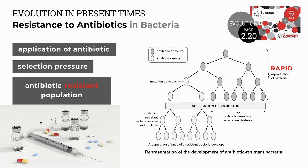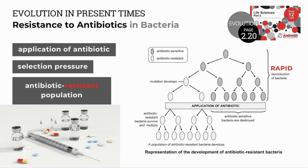Another diagram illustrates the same process. Antibiotic-sensitive bacteria multiply rapidly, a mutation occurs providing resistance to a particular antibiotic, and application of the antibiotic acts as a selection pressure. The antibiotic-sensitive bacteria die out, but the antibiotic-resistant bacteria survive and multiply to form an antibiotic-resistant population.